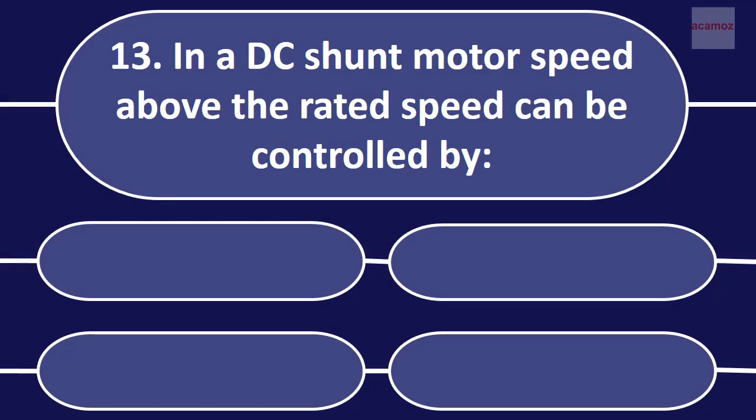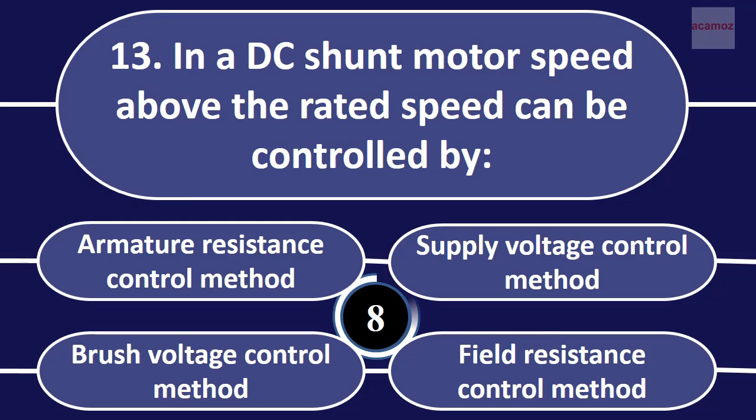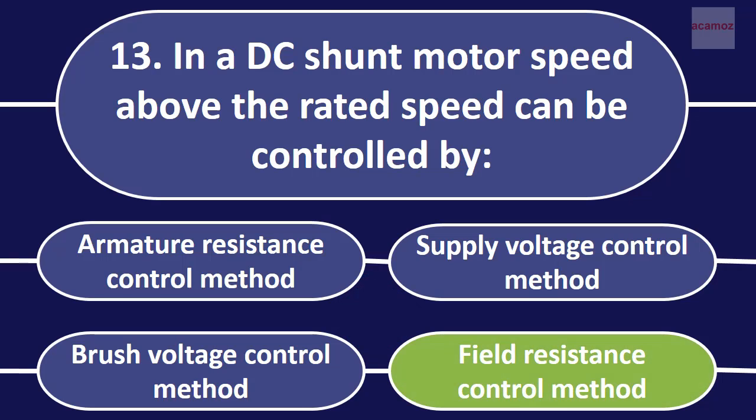In a DC motor, speed above the rated speed can be controlled by: armature resistance control method, supply voltage control method, field resistance control method.